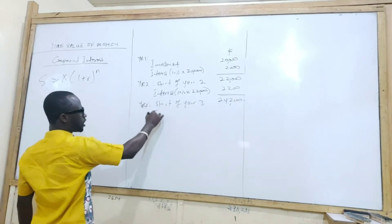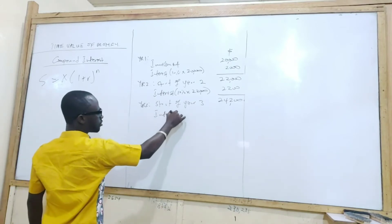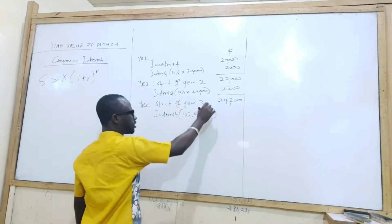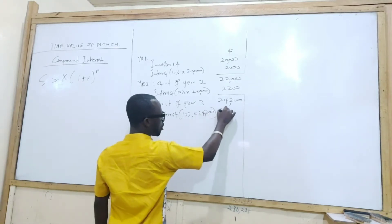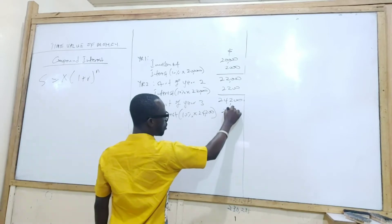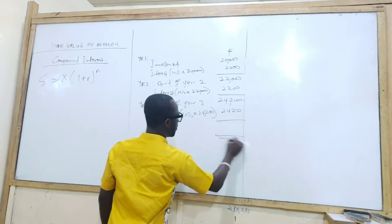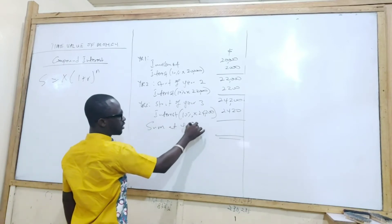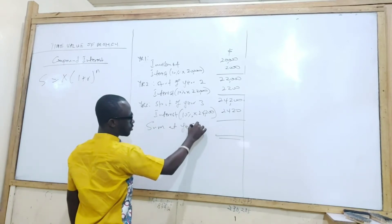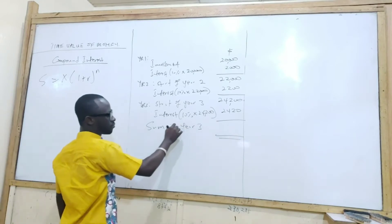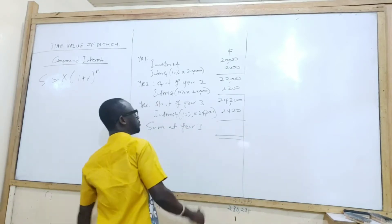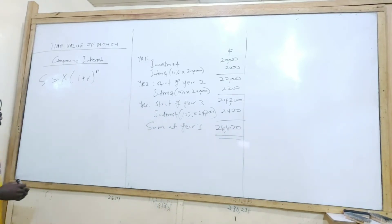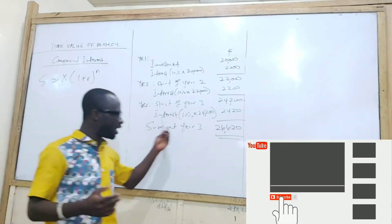And that's $24,200. Then interest for year three, 10% of $24,200. What you got? $2,420. So at the end of year three, what do we have? $26,620. So that is how much we will get at the end.